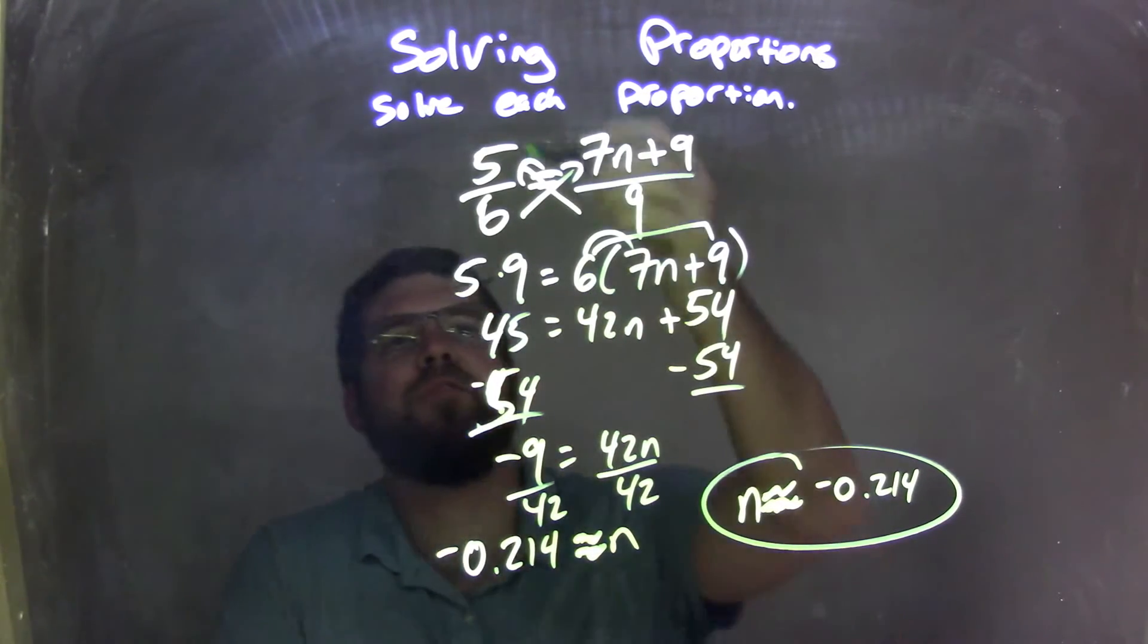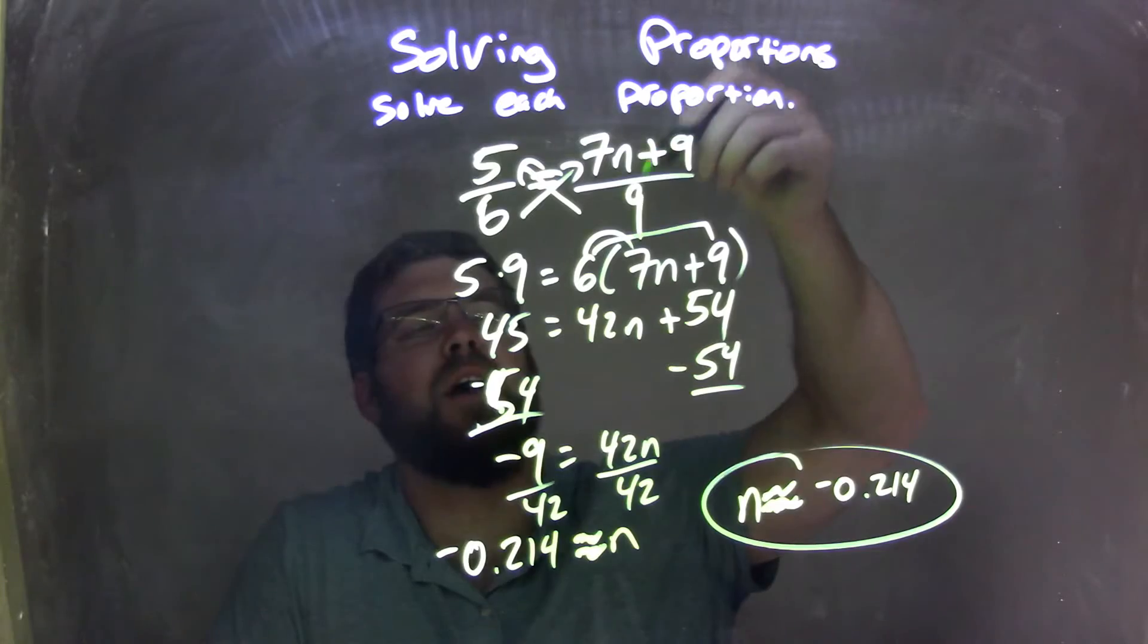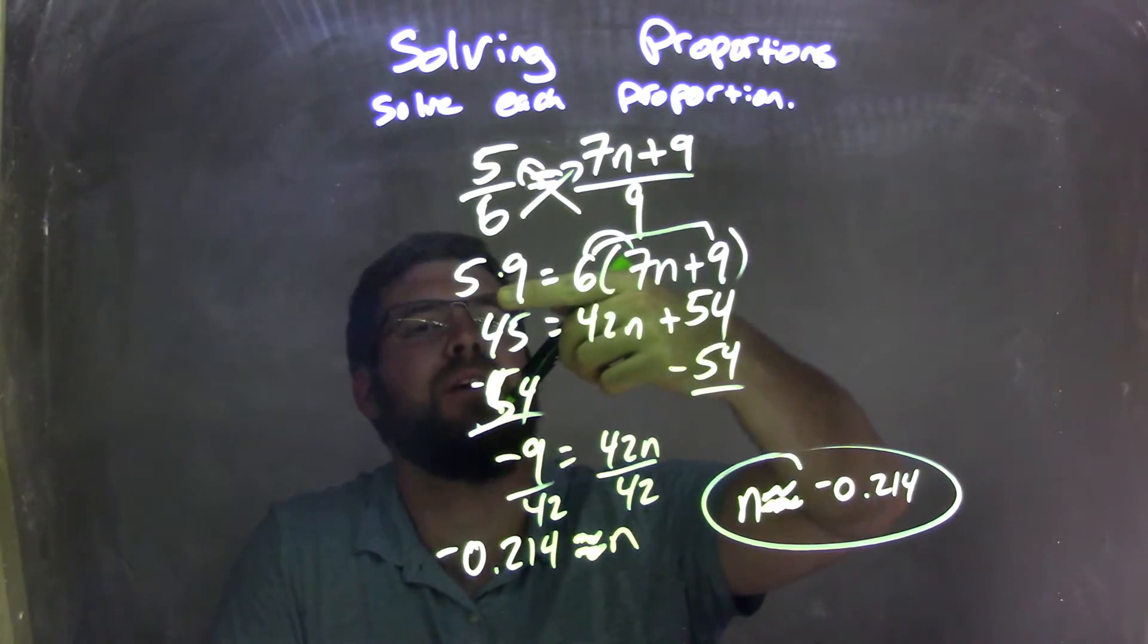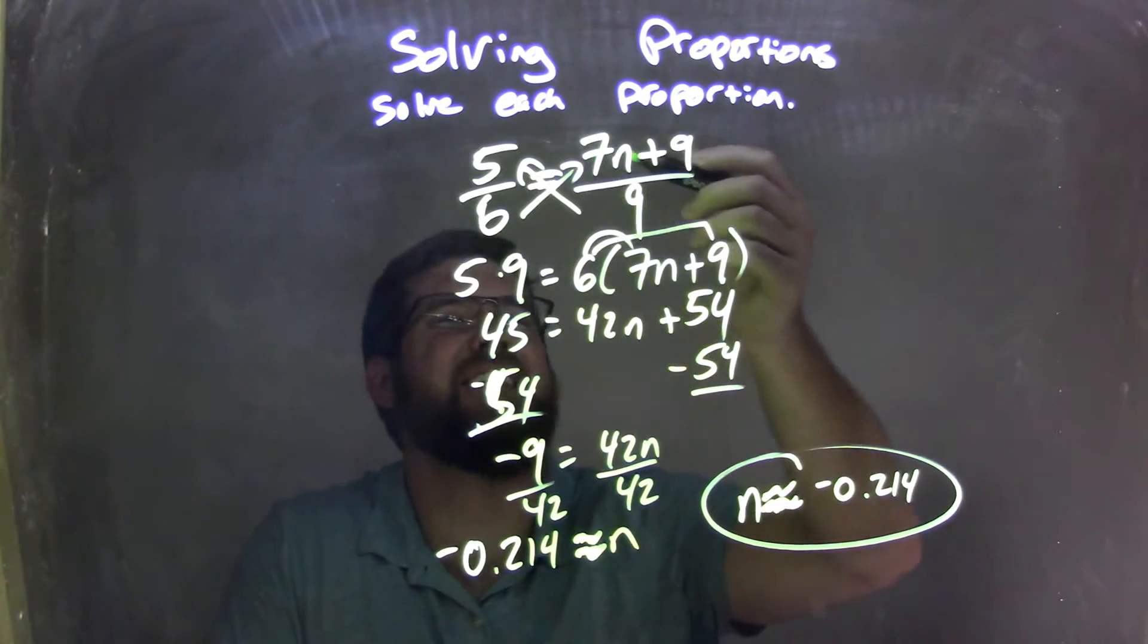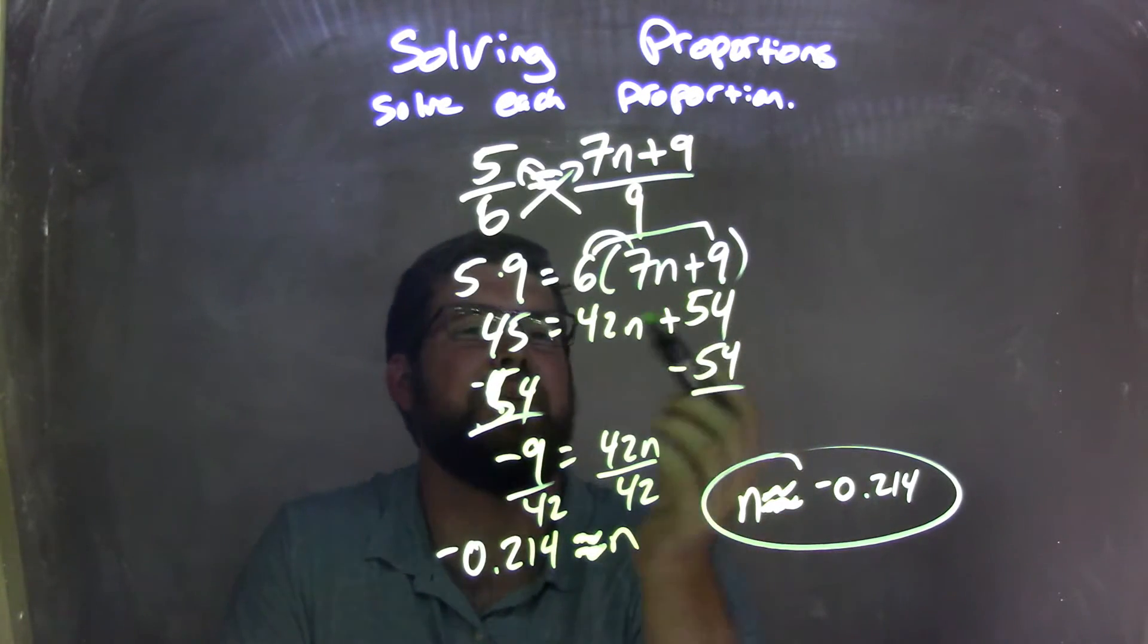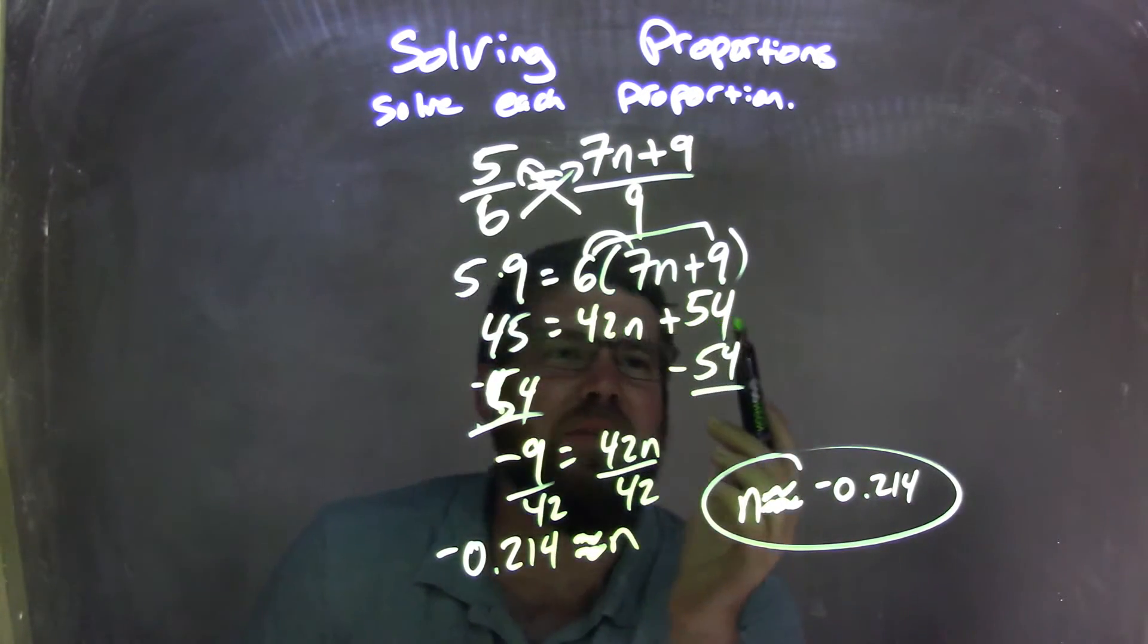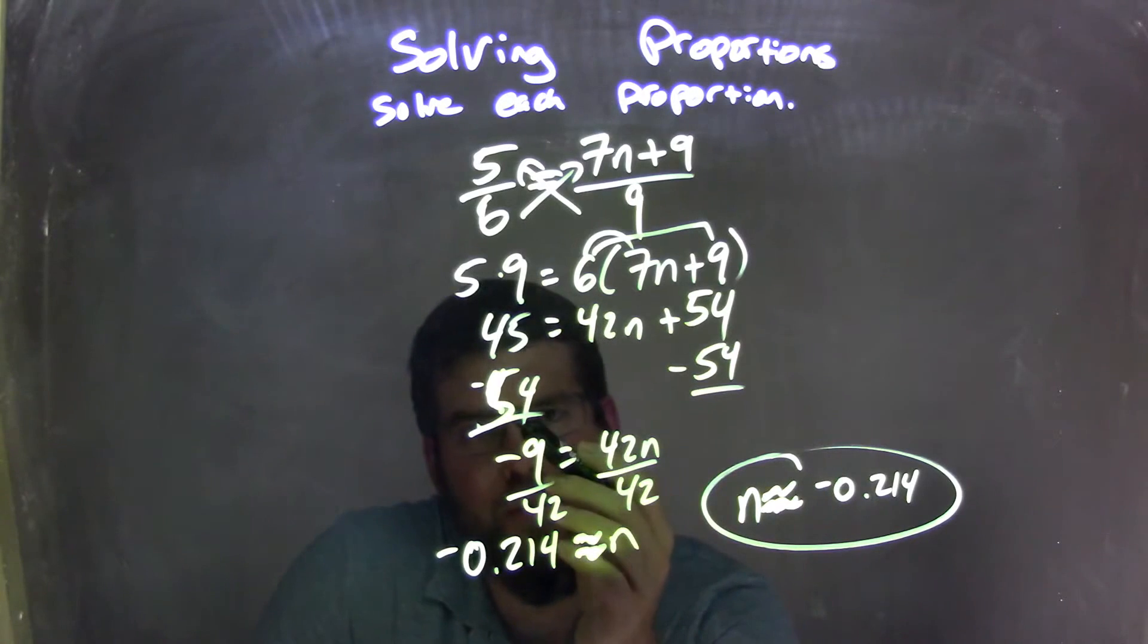So let's recap. We have 5 over 6 equals 7n plus 9 over 9. I cross multiply, giving me 5 times 9, which is 45, and 6 times 7n plus 9, which is distributed to be 42n plus 54.